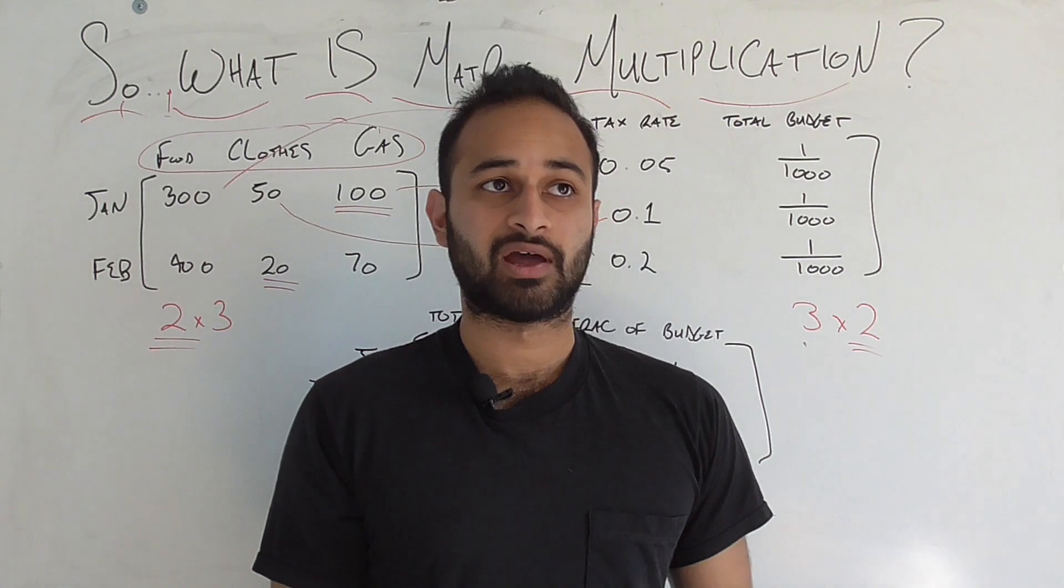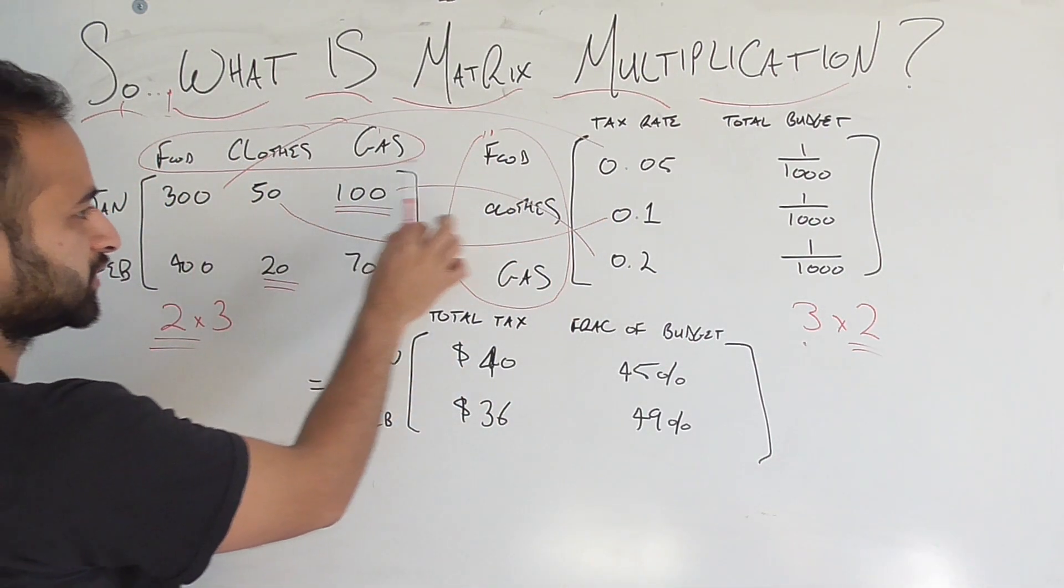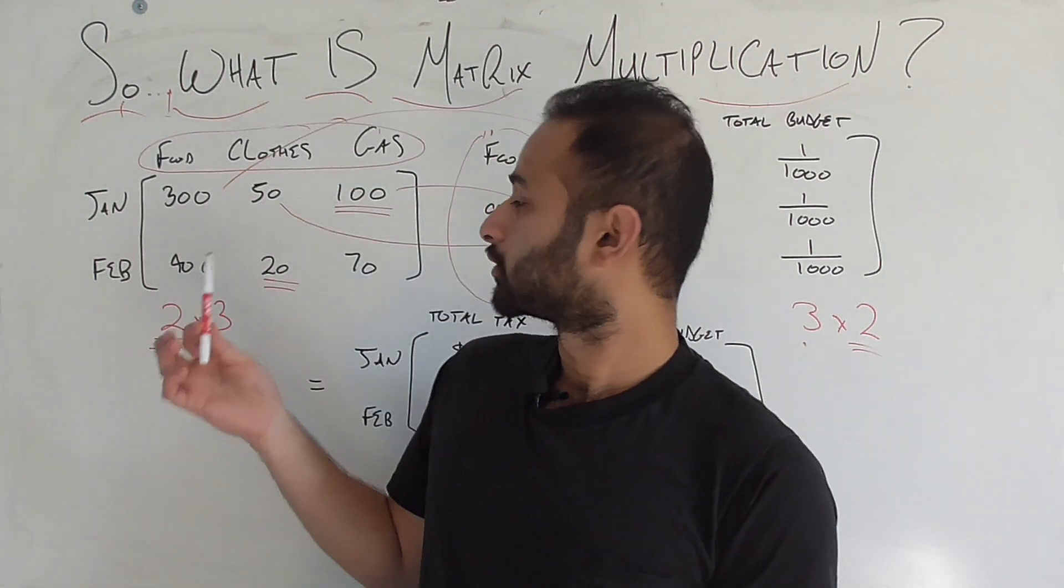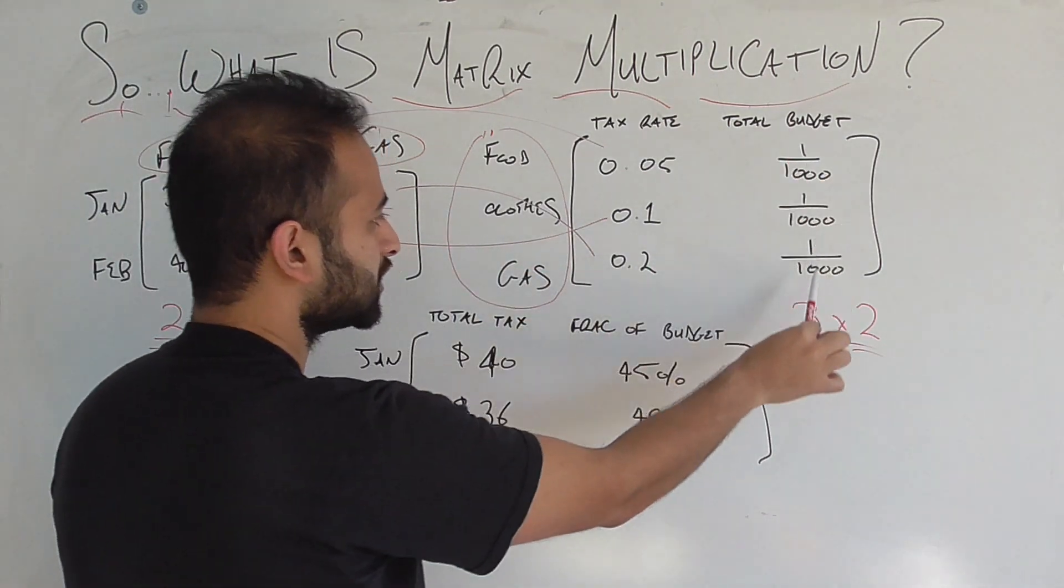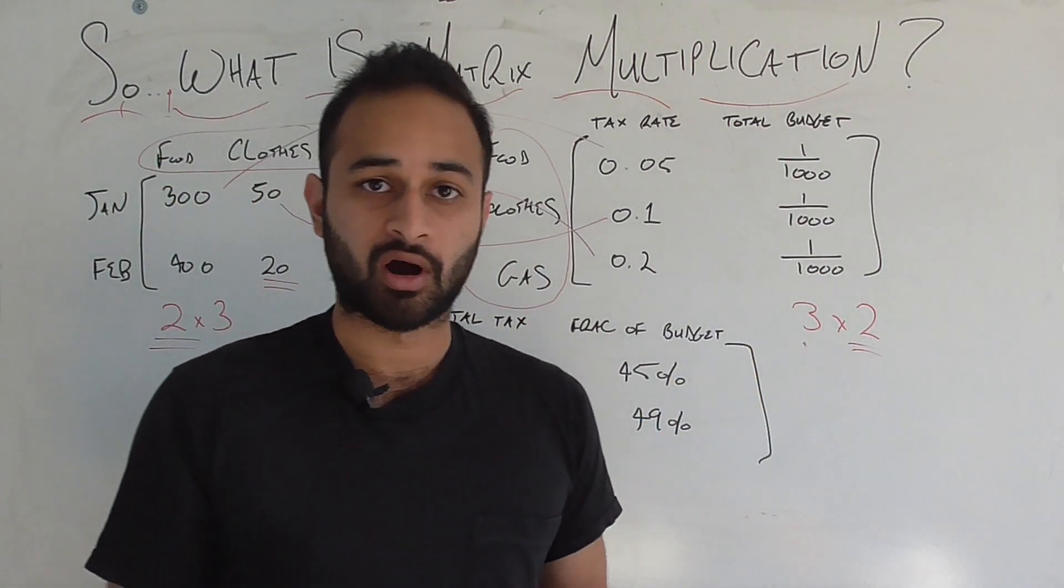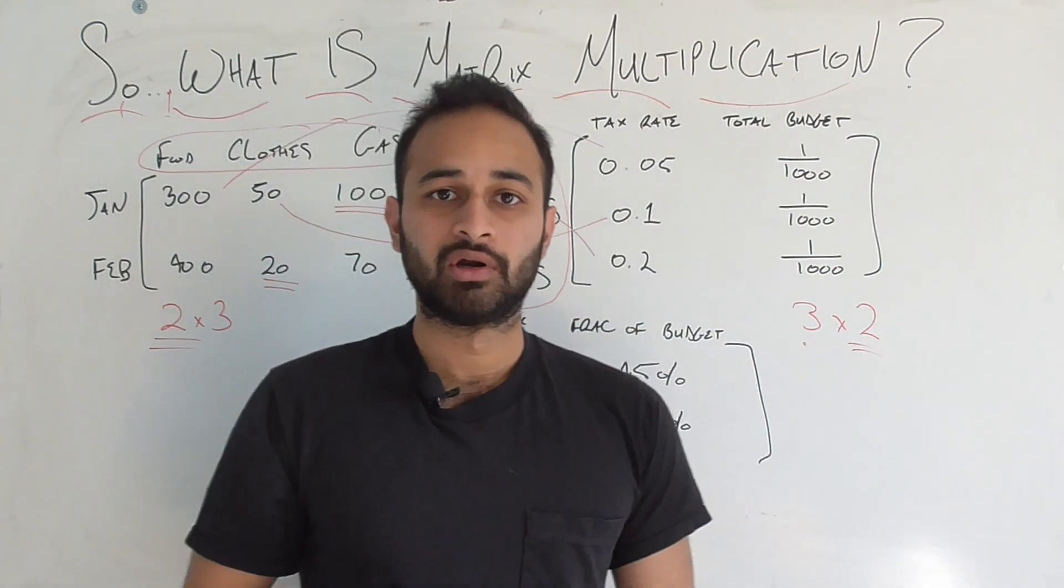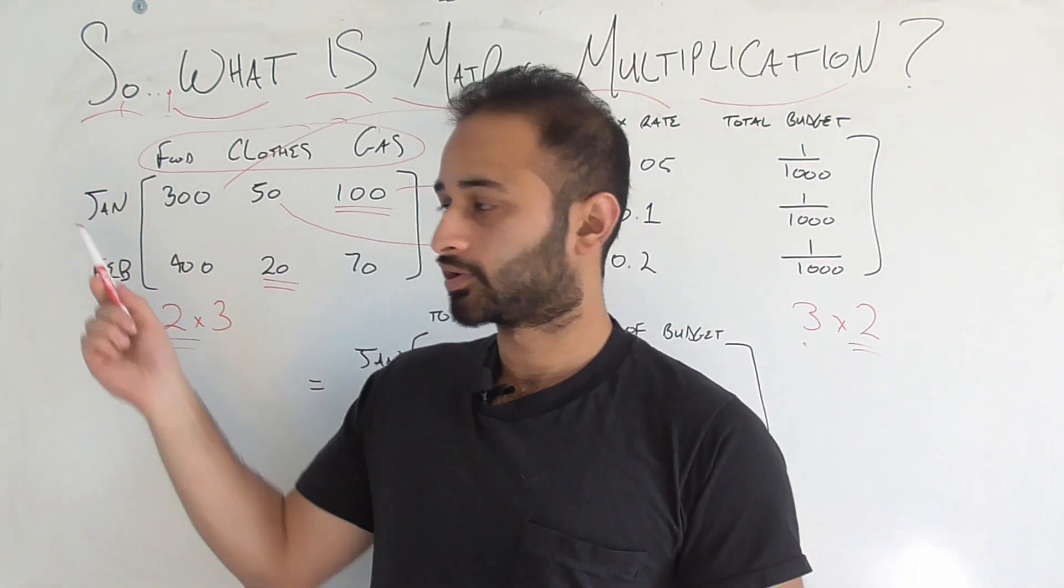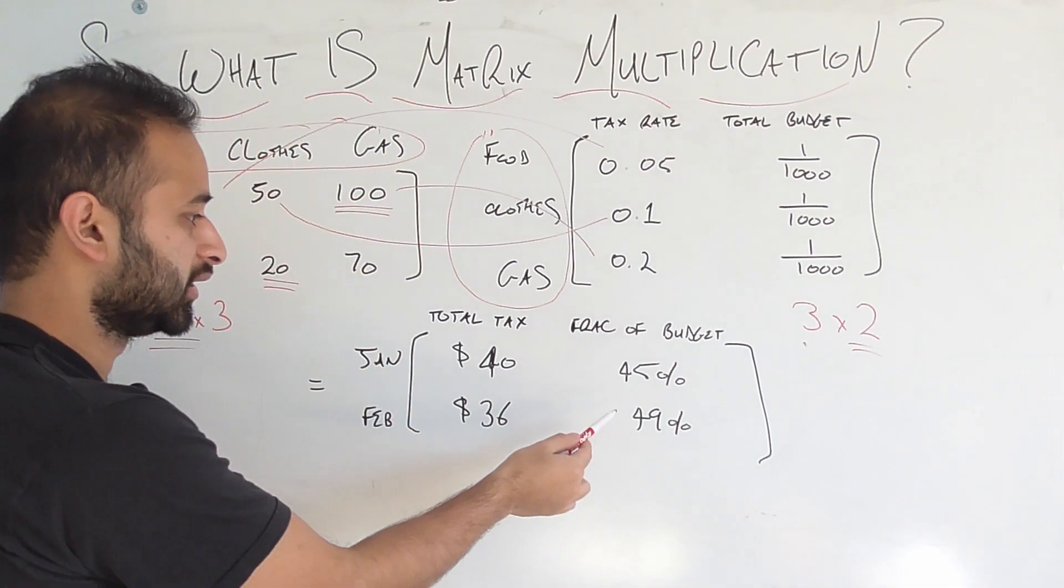That says that for food, we spent 30% of our budget on food. We add that to 50 over a thousand, so that will just give us 5% of our money spent on clothes. We do the same thing with gas, and when we add up these categories, which basically means taking the dot product of the January row with this total budget column, we're going to get the total percentage of our budget that we spent across all three of these categories for a given month. And that's exactly what we see here.